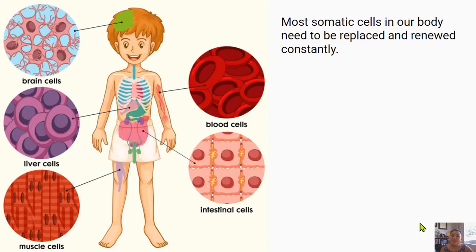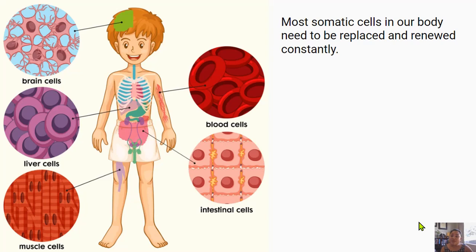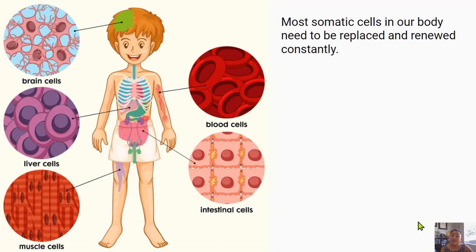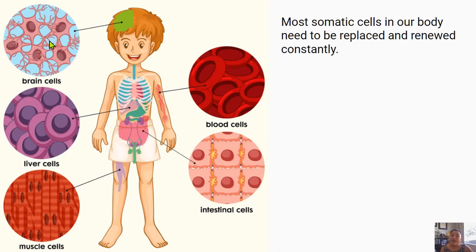Most somatic cells — those are normal body cells, or cells that aren't eggs or sperm — need to be replaced and renewed constantly. For example, red blood cells only live for about three months, so they need to be replaced to keep carrying oxygen around your body. And muscle cells can get damaged when you exercise, so they need to be replaced so your muscles can get bigger and stronger. So the somatic cells in your body carry out specialised tasks and when the time is right they get ready to replicate and divide.